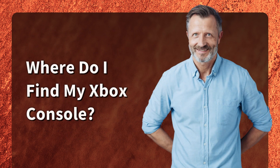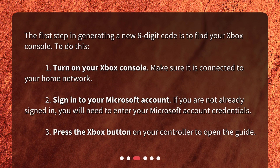Where do I find my Xbox console? The first step in generating a new six-digit code is to find your Xbox console. To do this: 1. Turn on your Xbox console and make sure it is connected to your home network. 2. Sign in to your Microsoft account — if you are not already signed in, you will need to enter your Microsoft account credentials. 3. Press the Xbox button on your controller to open the guide.